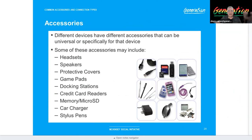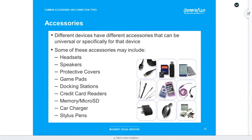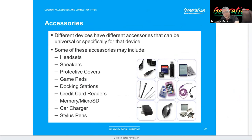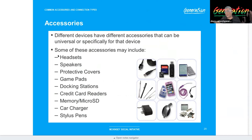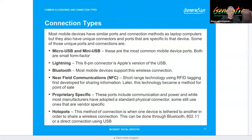Next we have the different types of accessories available for these devices. Some accessories are proprietary to specific devices and may not even be compatible with the next model — which is very annoying. You have headsets, speakers, protective covers, game pads, docking stations, credit card readers, memory card chargers, and stylus pens. For ports you have micro USB and mini USB. Apple has the Lightning port. You can connect via Bluetooth for a PAN network, or use NFC — near field communication — which has the shortest range for creating transactions.